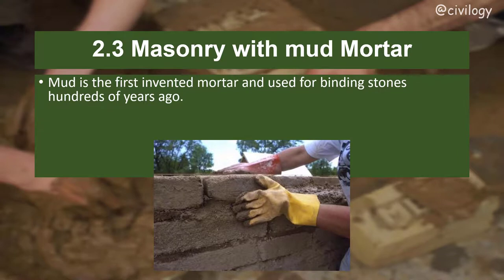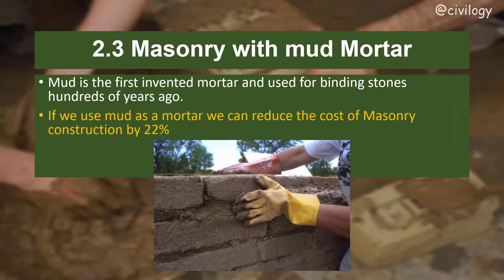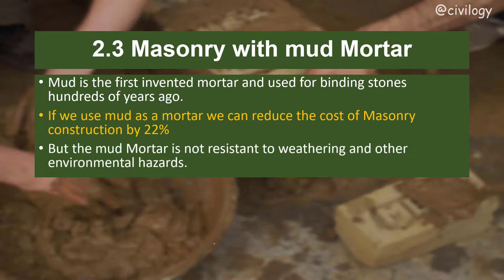Masonry with mud mortar: mud is the first invented mortar, used for binding stones for hundreds of years. Using mud as a mortar can reduce the cost of masonry construction by 22 percent. However, mud mortar is not resistant to weathering and other environmental hazards, so it is not commonly used today.